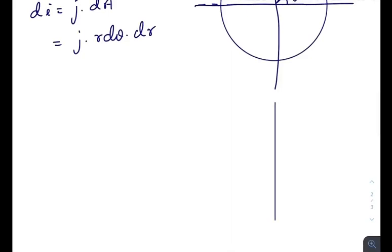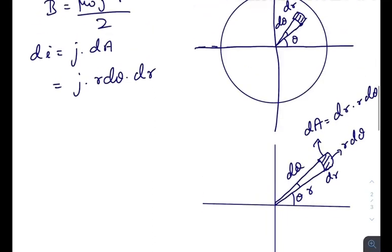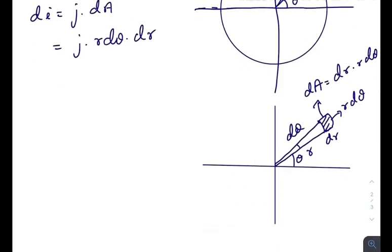Drawing this element separately: this is r, this is θ, this is dθ, and this is the element we are talking about. The thickness is dr and this thickness is r dθ, so the whole area is dr times r dθ. This is the current flowing through this small element, which acts as an infinite wire. The magnetic field on this infinite wire is acting along a specific direction.